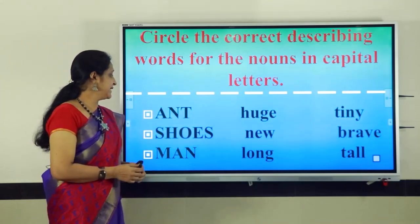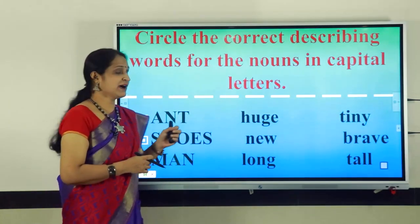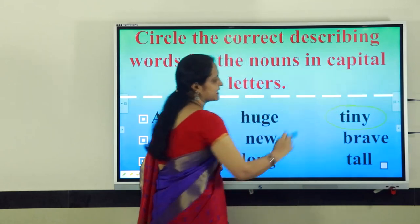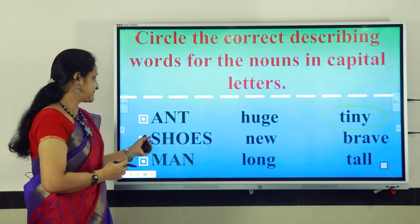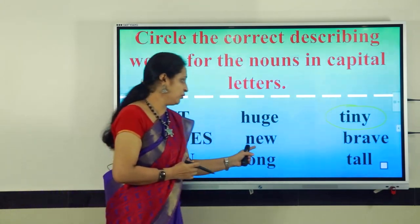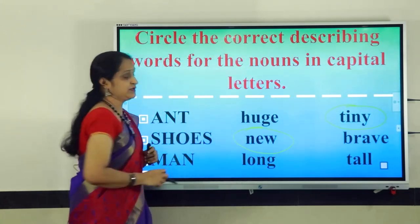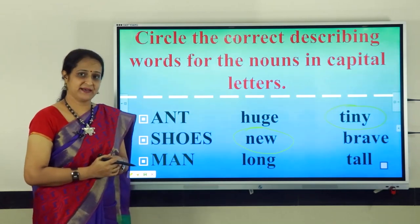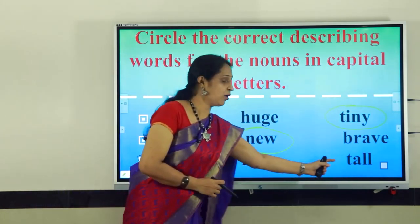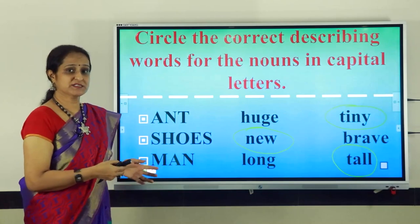On the left hand side you can see the nouns in capital letters and on the right hand side you can see two sets of words. The correct describing word for the noun ANT is tiny. Let us circle the describing word tiny for the ant. Next we have the noun shoes. Which describing word fits the noun shoes? Is it new or brave? Yes, new shoes. The third one: man. Which describing word is correct for the noun man? Is it long or tall? Yes, it is tall.